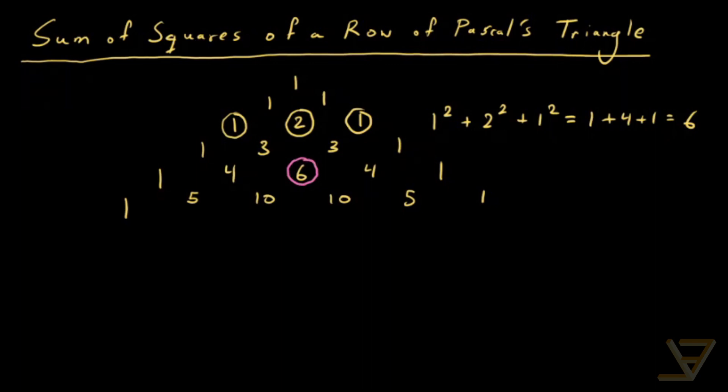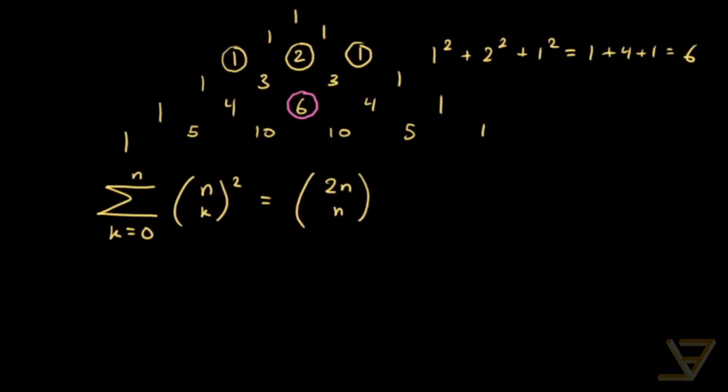So the conjecture that we'll attempt to prove is that the sum of n choose k squared for k equals 0 through n is equal to 2n choose n. And we'll see very quickly why this is true.